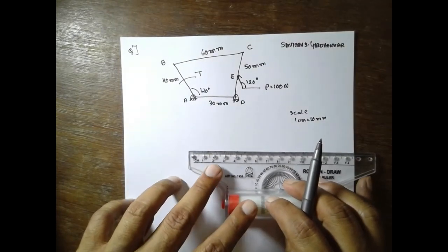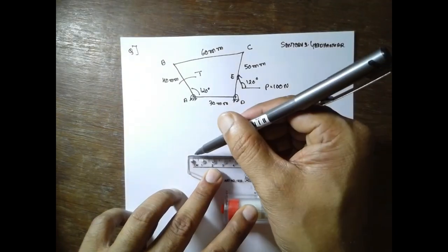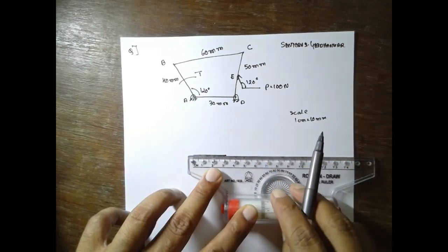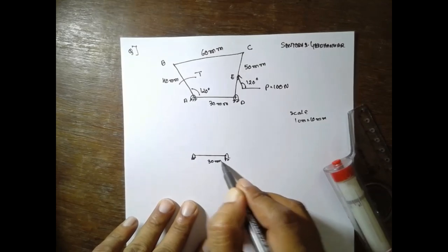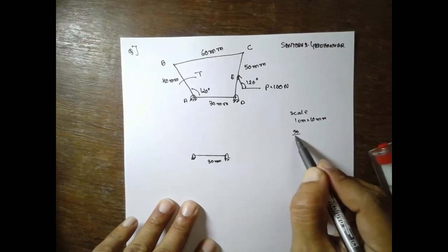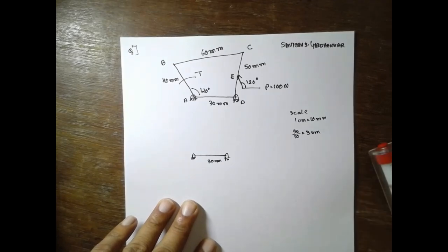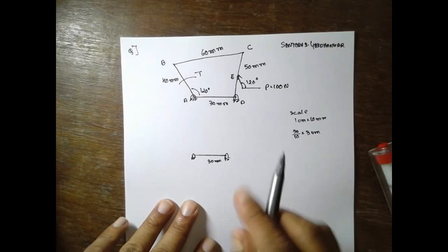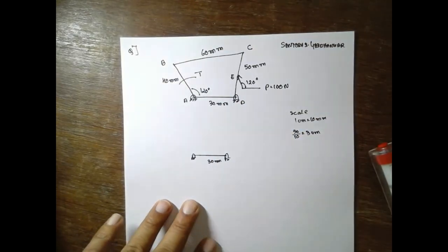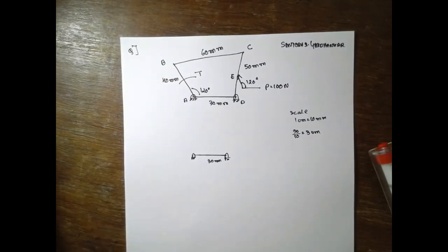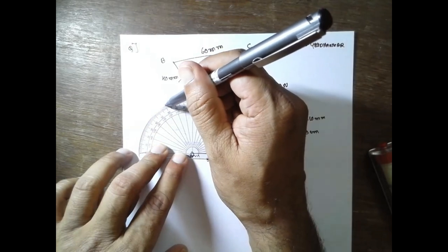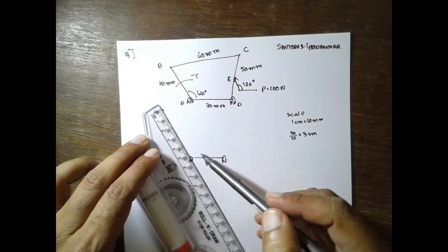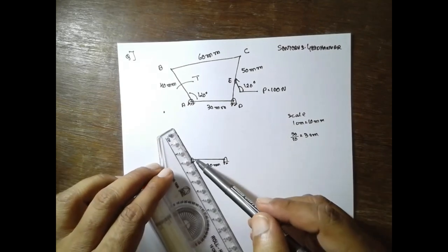First I will construct 30 here. AD is 30, that is 3 cm — 30 divided by 10 is 3 cm. I have taken 3 cm. Next, AB is 40 mm but they have made an angle of 120 degrees there. It is 4 cm, it is 40 mm.